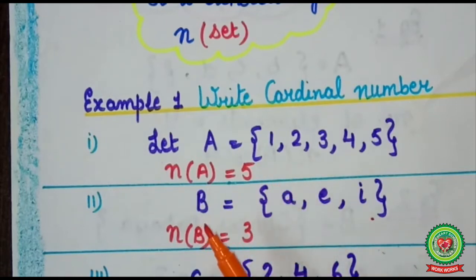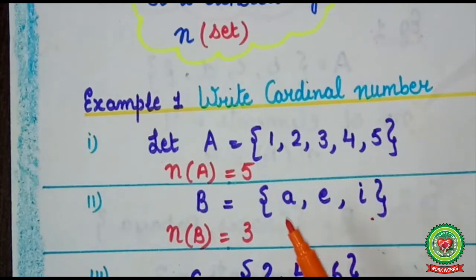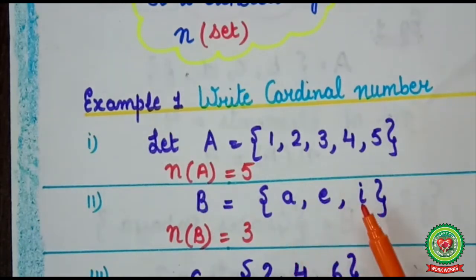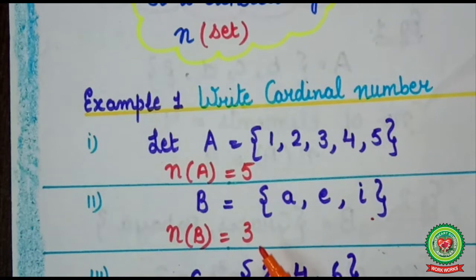Here set B is {A, E, I}, also given in roster form. The number of elements are 1, 2, 3. So the cardinal number of B is 3, that is n(B) = 3.